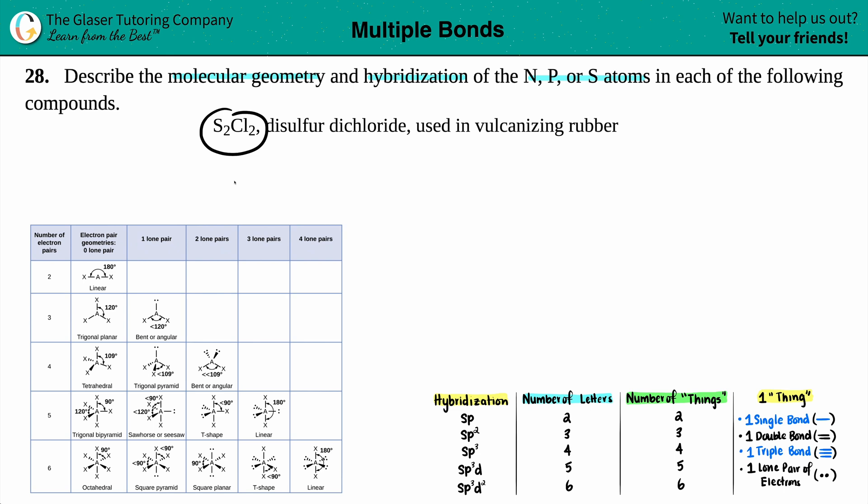I have between sulfur and chlorine, and generally the least electronegative would go in the center. Between sulfur and chlorine, sulfur is less electronegative than chlorine, so I'm gonna have two sulfurs next to each other. I'll put Cl and Cl on the outer sides.